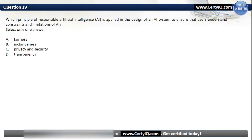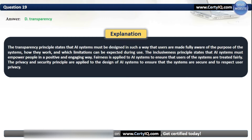Question 19. Which principle of responsible AI is applied in the design of an AI system to ensure that users understand constraints and limitations of AI? Options: A. Fairness, B. Inclusiveness, C. Privacy and Security, or D. Transparency. The correct answer is D. Transparency. The transparency principle states that AI systems must be designed so that users are fully aware of the purpose of the systems, how they work, and which limitations can be expected during use. Inclusiveness empowers people positively; fairness ensures users are treated fairly; privacy and security ensure systems are secure and respect user privacy.